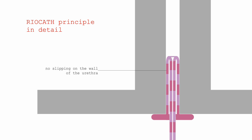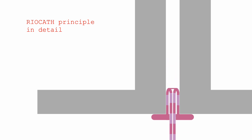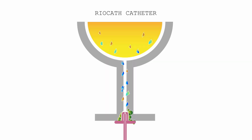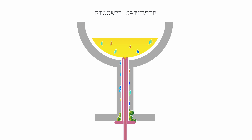Thus, instead of moving along the wall of the urethra forward as is the case with conventional catheters, the Ryocath catheter is continuously and gently progressing forward while leaving the portion which was previously touching the surface behind. Because of its revolutionary design, the Ryocath catheter rolls from the inside out, meaning that crystals and microbes cannot be moved from their original position.